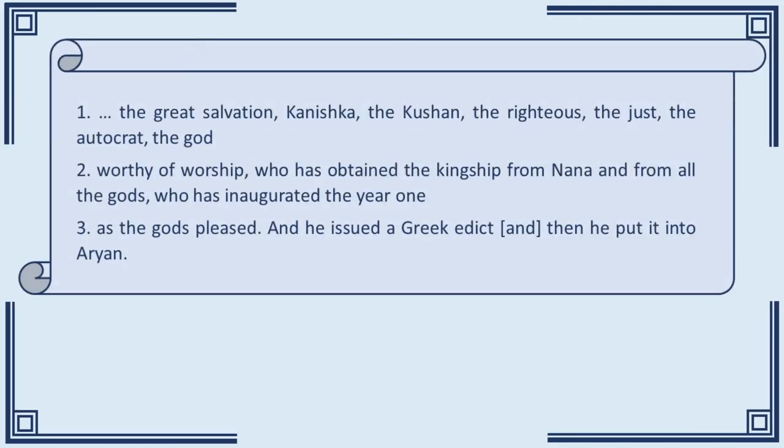The inscription opens as follows: 'The great salvation, Kanishka, the Kushan, the righteous, the just, the autocrat, the god, worthy of worship' — this is not an exercise in modesty — 'who has obtained the kingship from Nana and from all the gods, who has inaugurated the year one as the gods pleased, and he issued a Greek edict.' Obviously, the text is about aggrandising the king — that is its principal motive, the idea which gives it shape. He is righteous and just, ordained by gods, and the inscription tells us about deeds to reinforce that notion. This is the grain of the source.